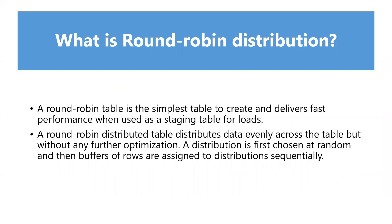What is round robin distribution? A round robin table is the simplest table to create and delivers fast performance when used as a staging table for loads. A round robin distributed table distributes data evenly across the table but without any further optimization. Unlike hash distribution where a hash algorithm assigns each row to one distribution, in round robin a distribution is first chosen at random, then buffers of rows are assigned to distributions sequentially. Round robin is quick to load data, but query performance can often be better with hash-distributed tables. Joins on round robin tables require reshuffling data, which takes additional time.